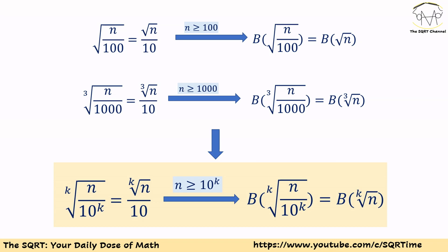Since N is large, we can divide N by 100, or 1000, or in general 10^k, if we are careful about the value we pick for k. We know that the square root of N over 100 equals the square root of N over 10, and the leading digit of sqrt(N/100) equals the leading digit of sqrt(N). We can use the same approach and say the leading digit of the cube root of N/1000 equals the leading digit of the cube root of N, and in general we can apply this approach for 10^k.